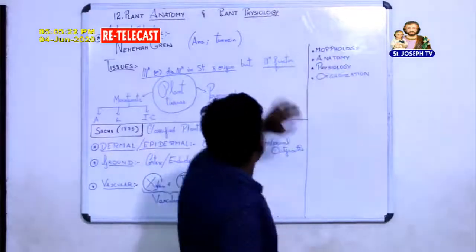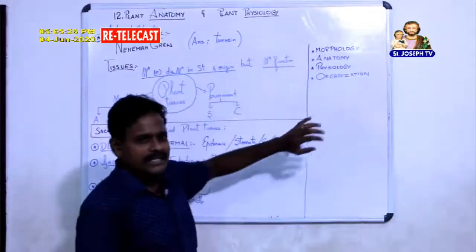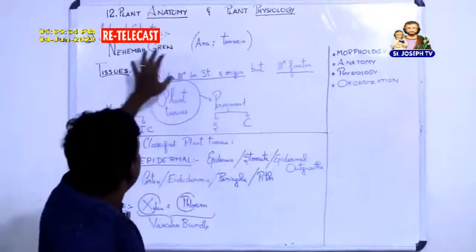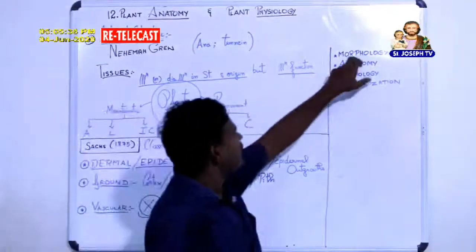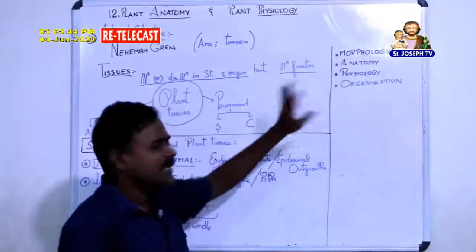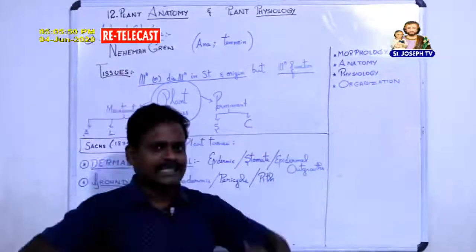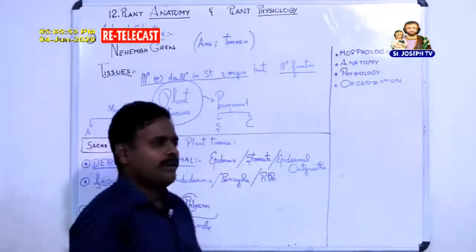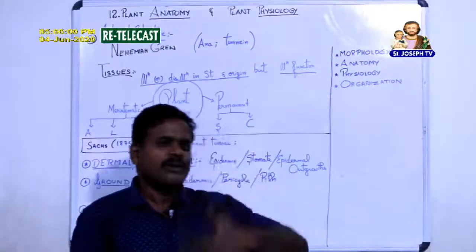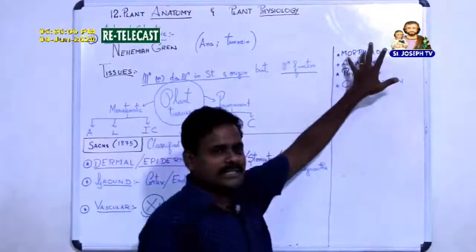Before going into the lesson, let me give a small hint about four concepts: morphology, anatomy, physiology, and organization — which are interrelated though not all are in your book. Morphology is the study of the external or outer structure of a plant or animal. For example, a hand, nose, or eyes — and in plants, leaf, root, and stem.